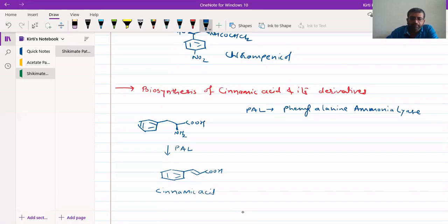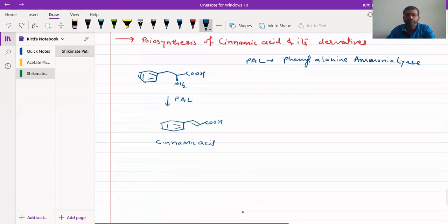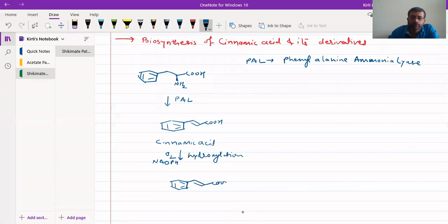The second route: from this cinnamic acid can be further hydroxylated. Cinnamic acid can be hydroxylated in presence of NADPH. It undergoes hydroxylation at the para position. We get para-hydroxycinnamic acid, or what we also call 4-cumeric acid.